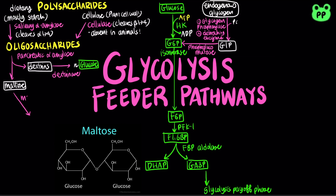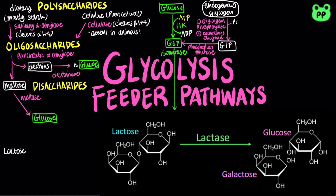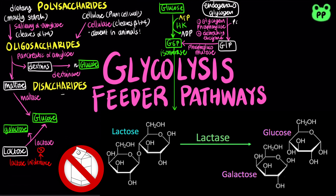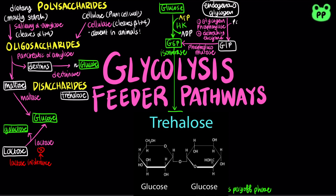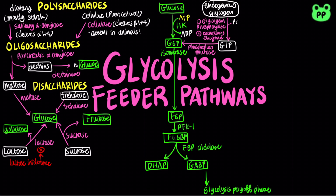Maltose is degraded by maltase into two glucose molecules. Other dietary disaccharides include lactose, which is degraded by lactase into glucose and galactose. Deficiency in the enzyme lactase will result in lactose intolerance. Trehalose is degraded by trehalase into two glucose molecules. And sucrose is degraded by sucrase into glucose and fructose. Monosaccharides and the main glycolysis pathway are labeled in green.